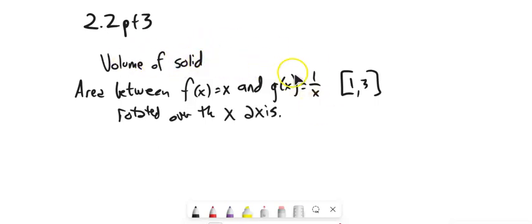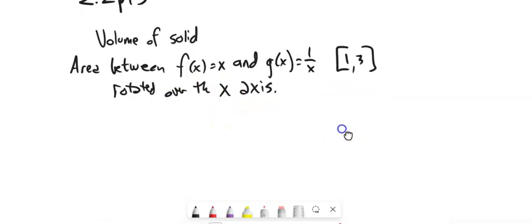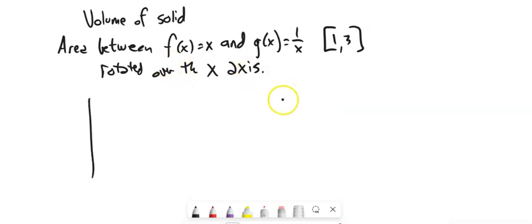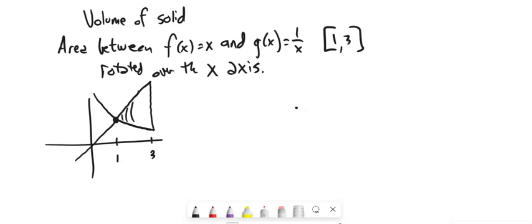So we want to find the volume of the solid that's made by taking the area between these two functions, f(x)=x and g(x)=1/x, bounded between 1 and 3, and rotating it over the x-axis. Let's get a sketch of this. I know that f(x)=x looks like this, and g(x)=1/x looks like this. When x is 1, y is 1 on both of these. They intersect at the point (1,1), and it's going to go to where x is 3. So here's my area right here.